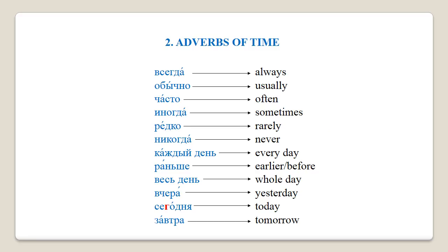Now let's have a look at some new adverbs of time. Please repeat after me: всегда (always), обычно (usually), часто (often), иногда (sometimes), редко (rarely), никогда (never), каждый день (every day), раньше (before/used to), весь день (all day), вчера (yesterday), сегодня (today), завтра (tomorrow).